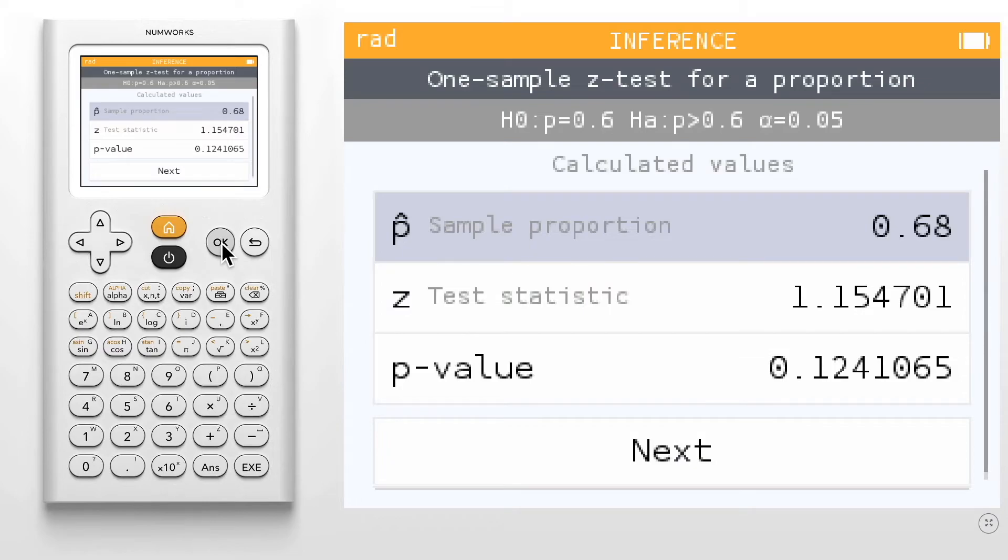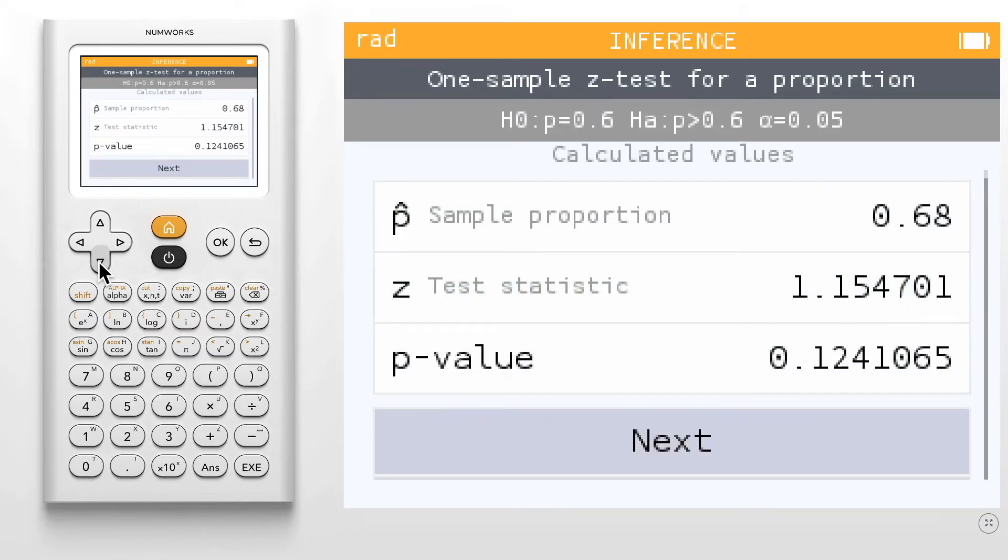We now see the calculated values for this test, which include the sample proportion, the z-test statistic, and the p-value. Select Next.